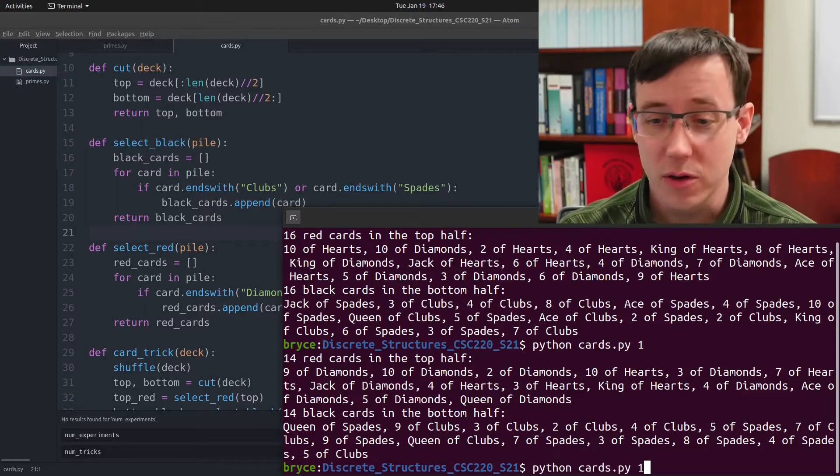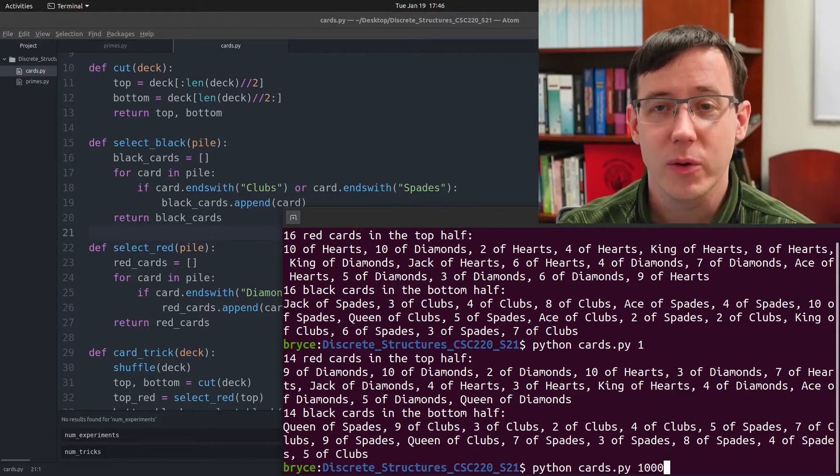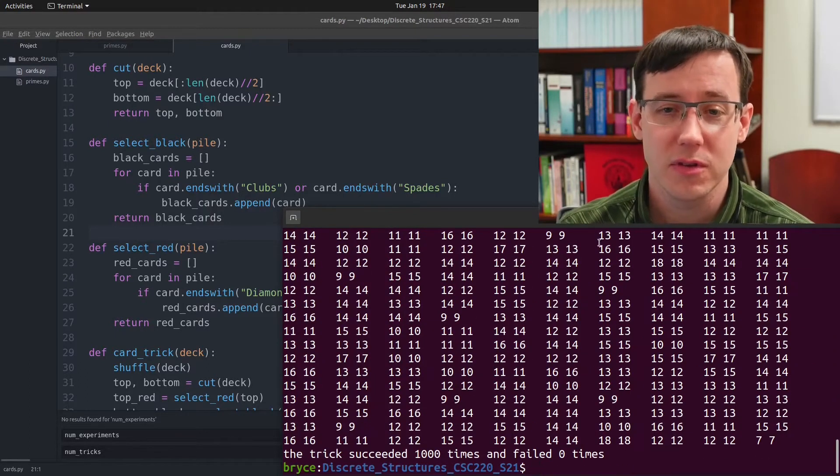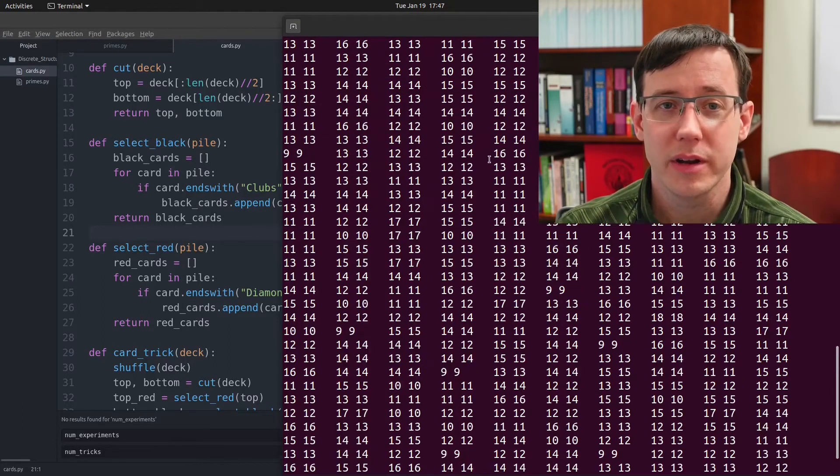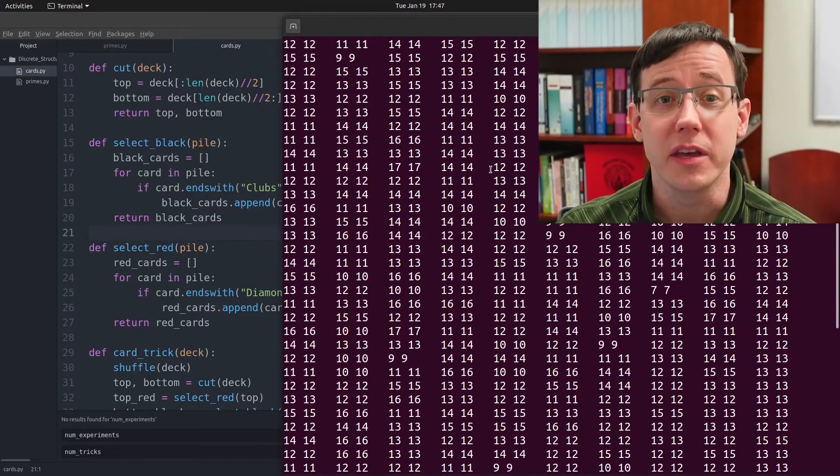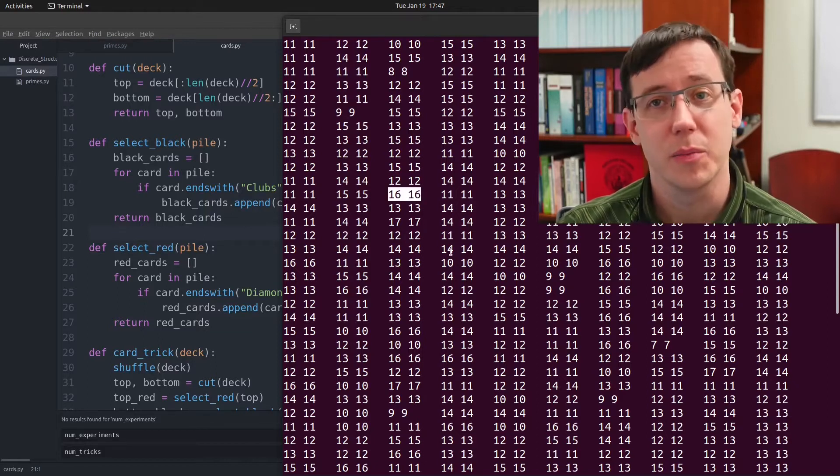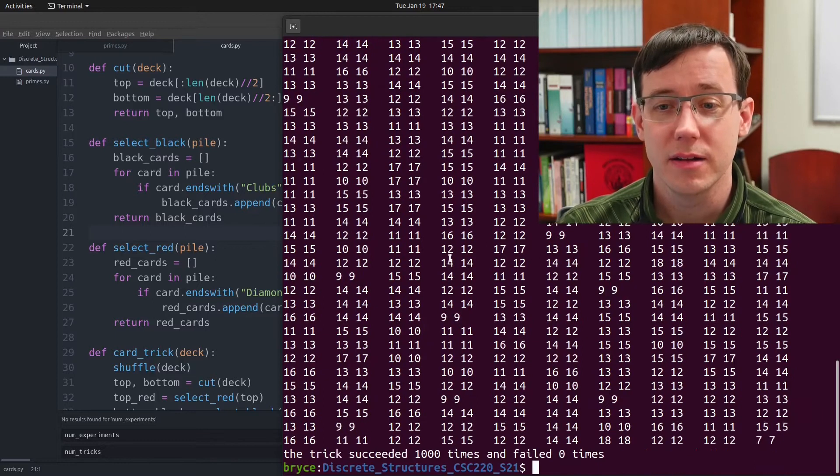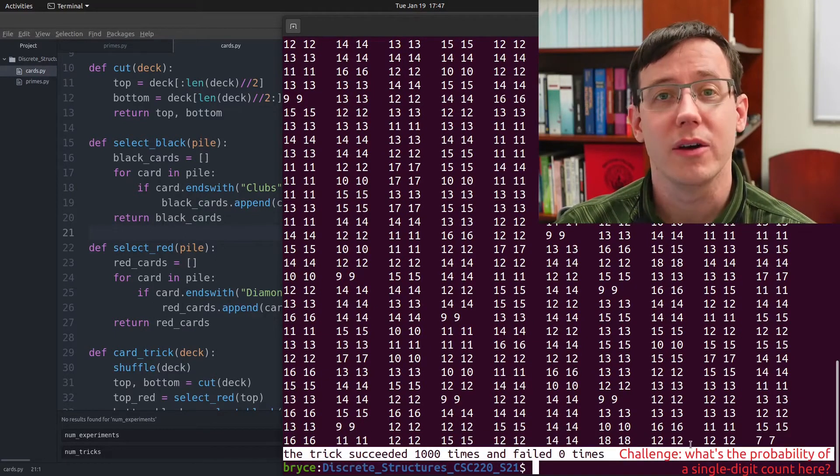But with the Python code, we can easily run an experiment where we do this 1,000 times. And here we've printed out all of the pairs of how many red cards in the top and how many black cards in the bottom half of the deck. And they matched all 1,000 times.